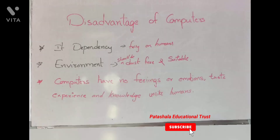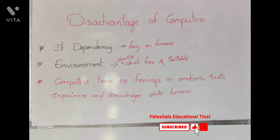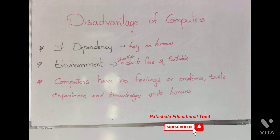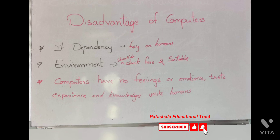We also have disadvantages of computers. A computer is a machine that has no intelligence of its own — it performs only the tasks we give it. Each and every instruction has to be given to the computer by the human. A computer cannot take any decision on its own; it functions as per the user's instructions and is fully dependent on humans.